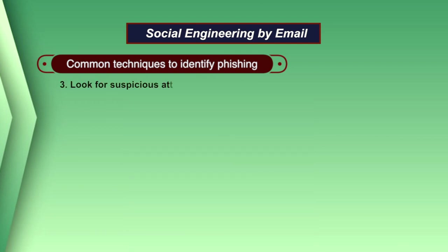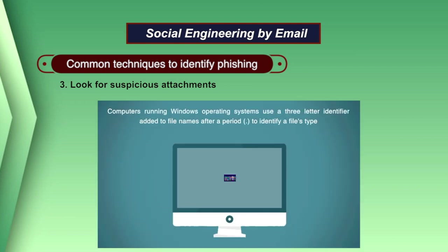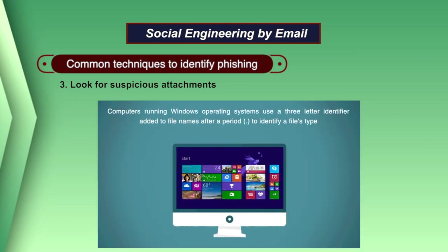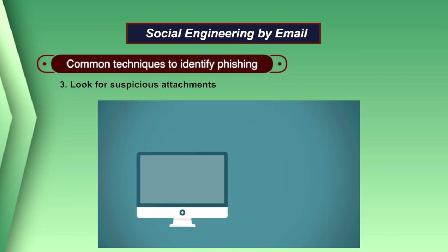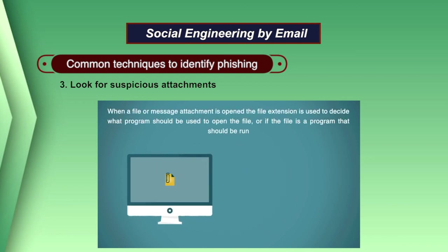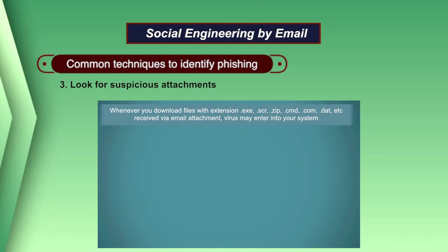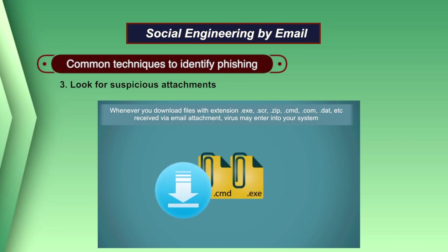Another technique to identify a phishing attack is to look for suspicious attachments. Carefully review whether it is the first time your bank has sent you an attachment. The majority of financial institutions or retailers will not send attachments via email, so be careful about opening any messages that seem suspicious. High-risk attachment file types include .exe, .scr, .zip, .com, or .bat.